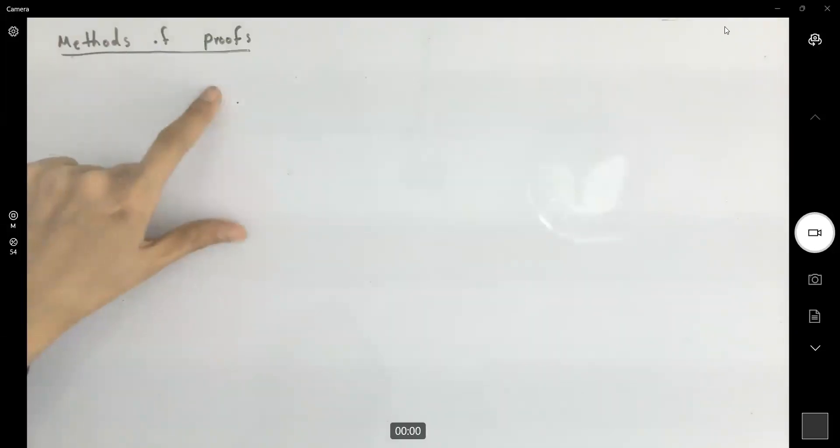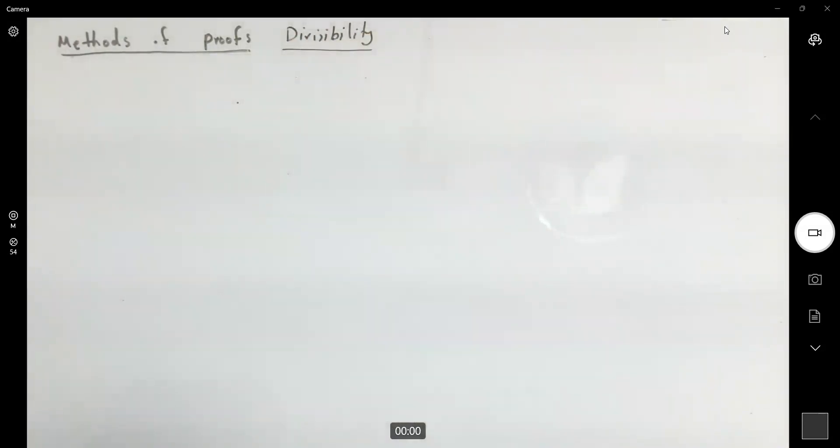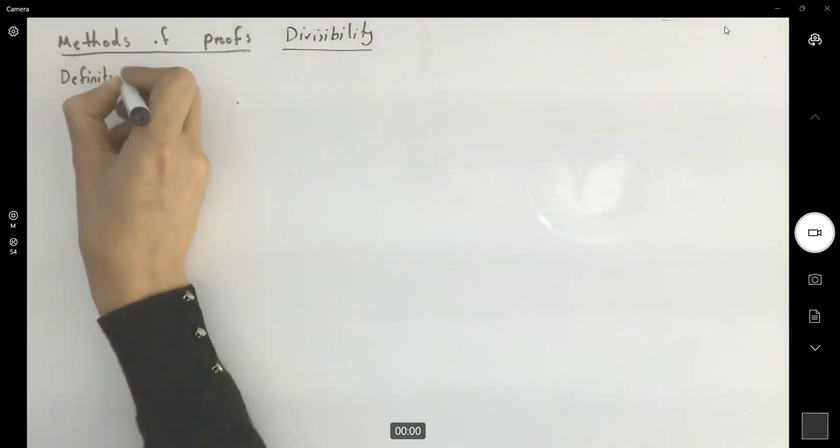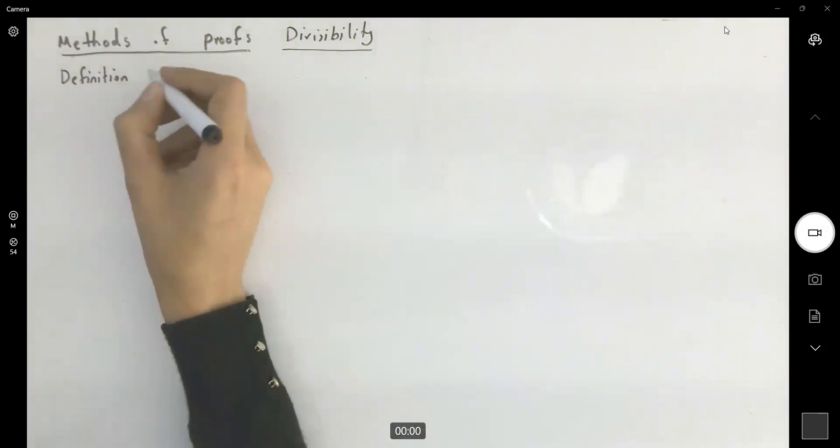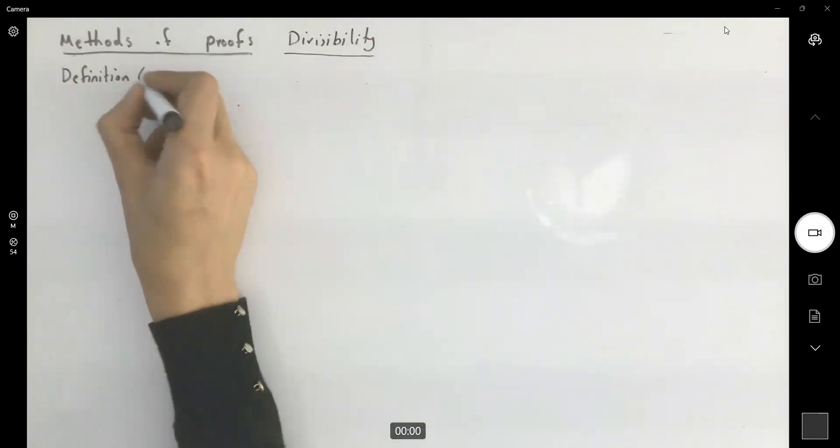We're still working on methods of proof, so now we're going to move on to divisibility. Let's go over the definition. The most important step in math is to specify the definition.